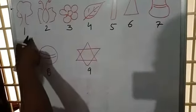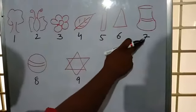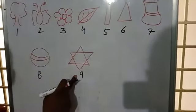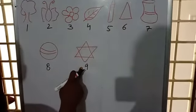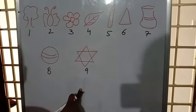So what are the different objects I have? I have tree, butterfly, flower, leaf, pencil, triangle, pot, ball, and star. Now I have got 9 objects with me. I have written the number.